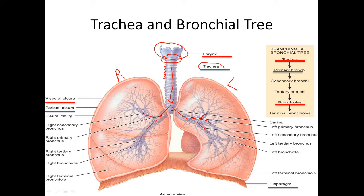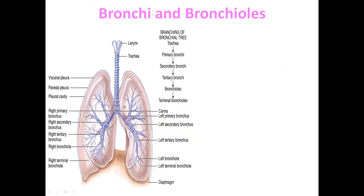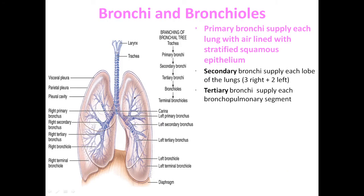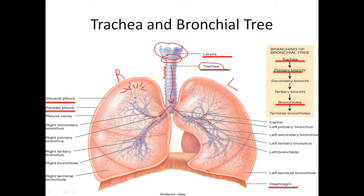So those are the tubes leading into the lungs: the trachea, then the bronchi splitting into primary bronchi and secondary bronchi. As they get smaller and smaller, these smallest branches are microscopic and they're called bronchioles. The bronchioles are the smallest of the branches. You also need to be able to identify your right and left lung on this diagram.